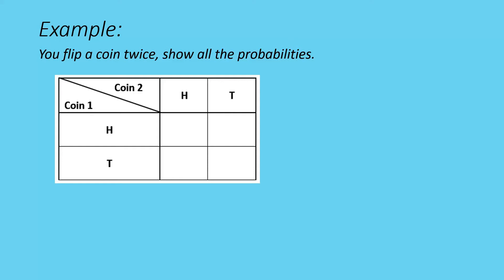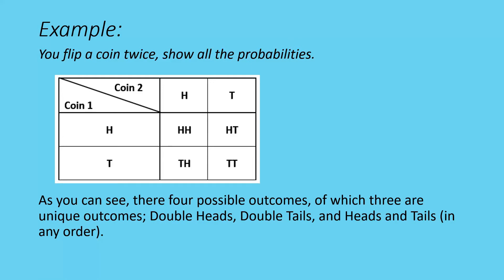If you flip and get heads then heads, you fill in that block: heads-heads. Heads then tails gives heads-tails. Tails first then heads goes in the next block, and the last one is tails-tails. You can see there are four possible outcomes — three of which are unique if order doesn't matter: double heads, double tails, and heads-tails in any order.